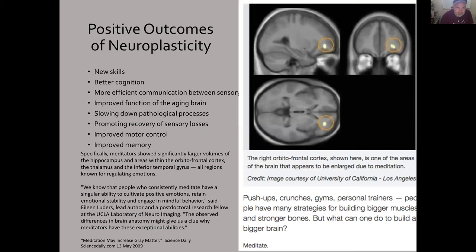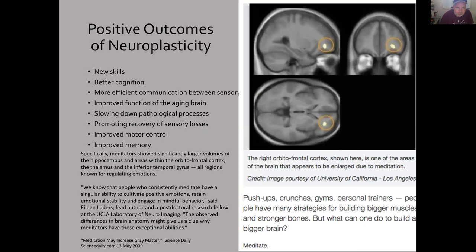What is not well understood is how we do this. Positive outcomes of neuroplasticity include new skills — people are learning motor skills, language skills, and cognitive skills through neuroplasticity. This has been shown in part of the orbital frontal cortex, the part of the brain I'm actually working on, on the right side especially, which appears to be enlarged due to meditation. Improved function of the aging brain has become a big deal, and we'll talk about that in the next couple of slides. Slowing down pathological processes — there are a number of pathologies that can be shown to be reduced through mindfulness-based practices.